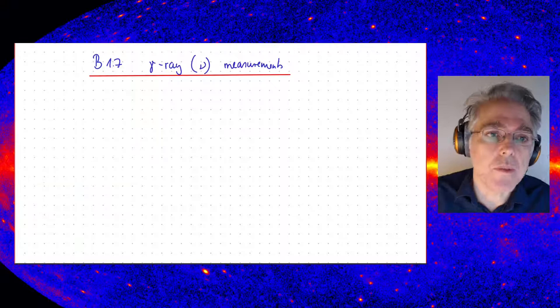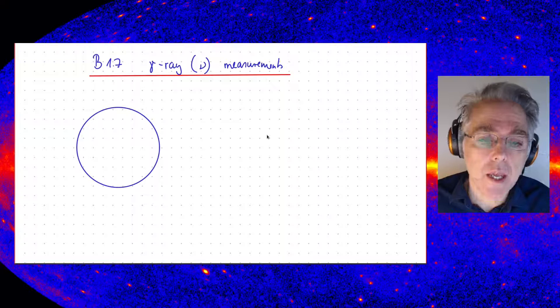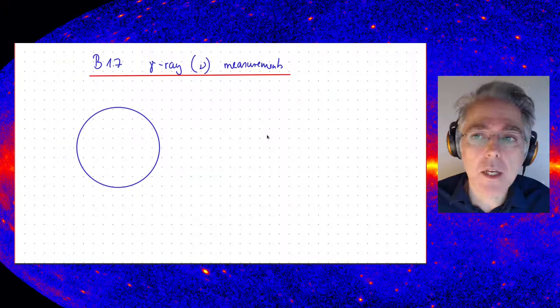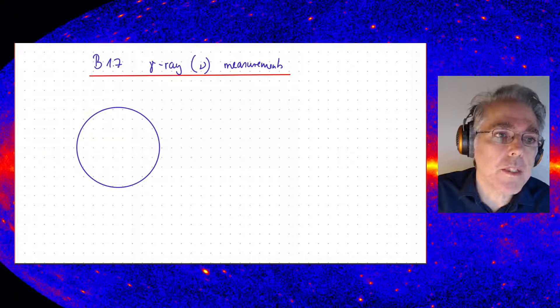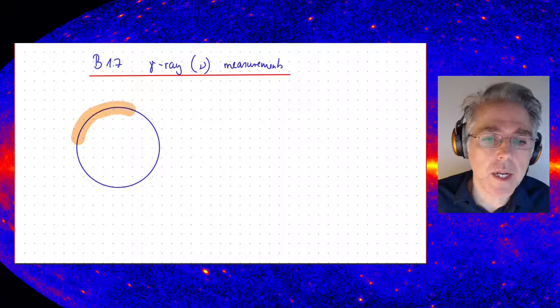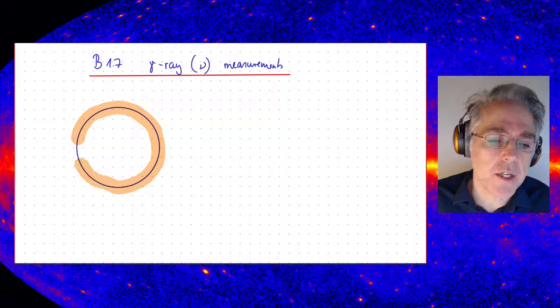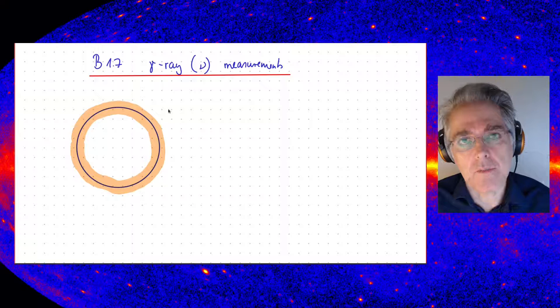If you imagine taking a supernova remnant — a very simple picture, first order just a sphere which is the forward shock of the expanding blast wave — we learned that in this shock region we will have particles accelerated. We can imagine that energetic particles will be accelerated in the outer part of this shock or in the vicinity of the shock. There is something like a population of particles living in the vicinity of this shock.